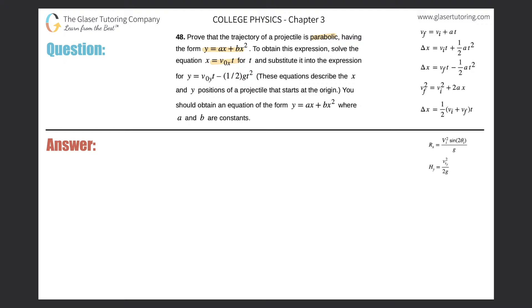Let's draw a coordinate axis and a velocity vector. This velocity vector has a certain angle theta, and we'll call this the initial velocity. That initial velocity relative to that angle has components — it has an x and a y component. Here's the x component; we'll call that vi sub x. And it also has a y component; we'll call that viy.